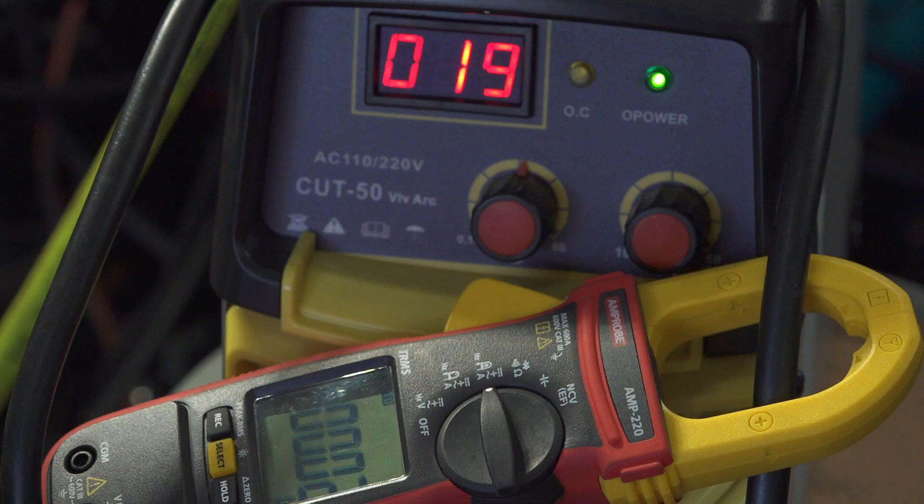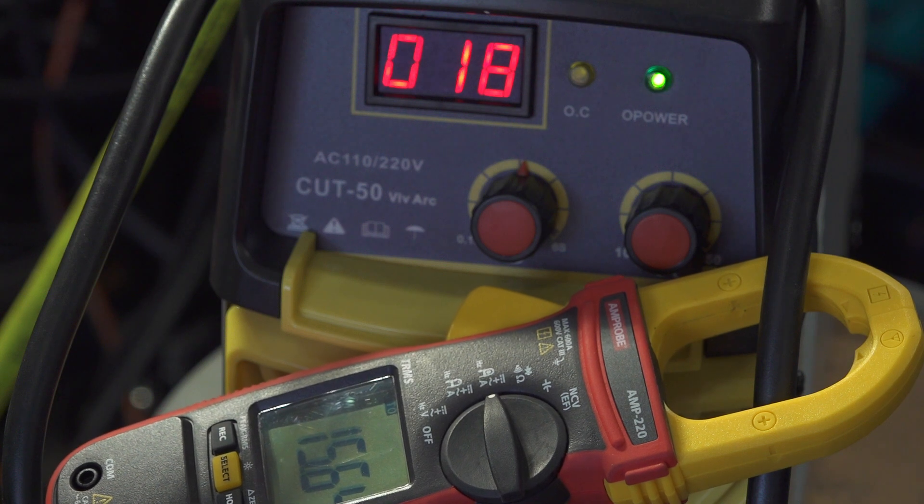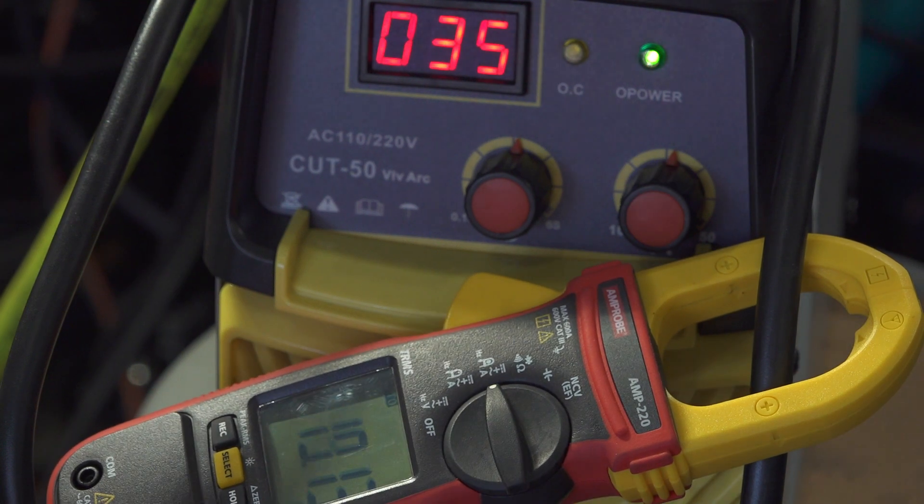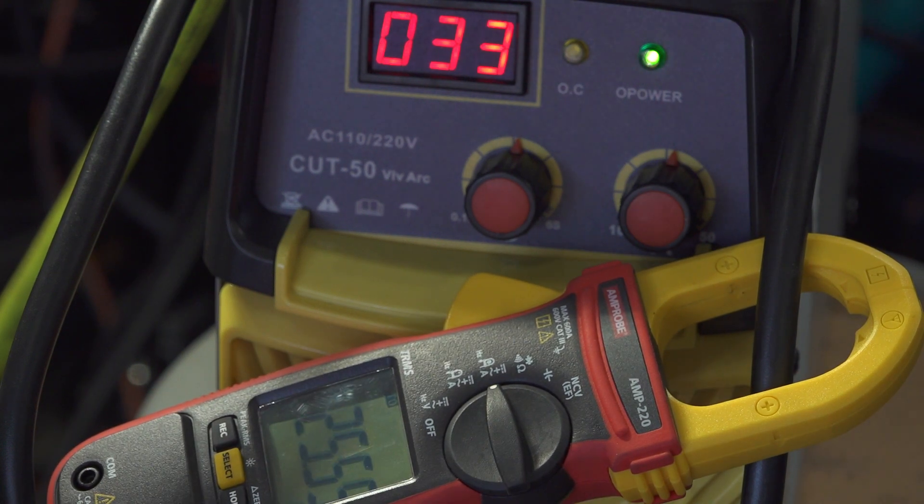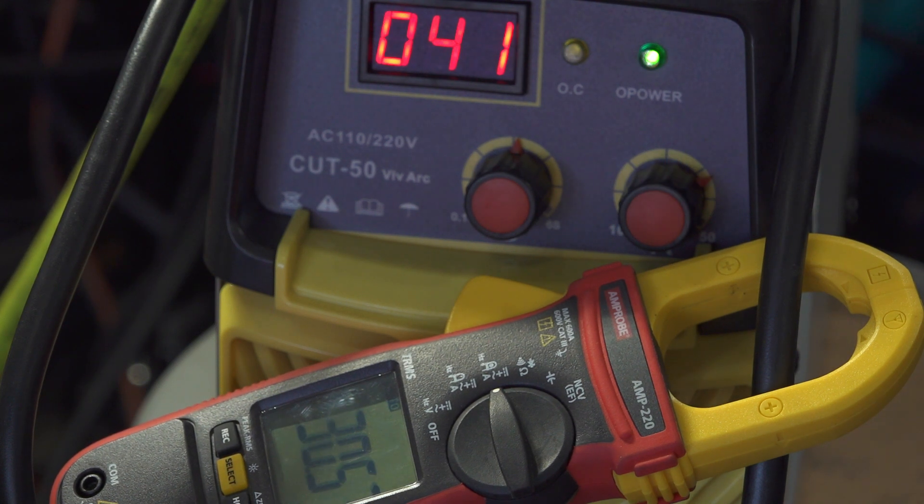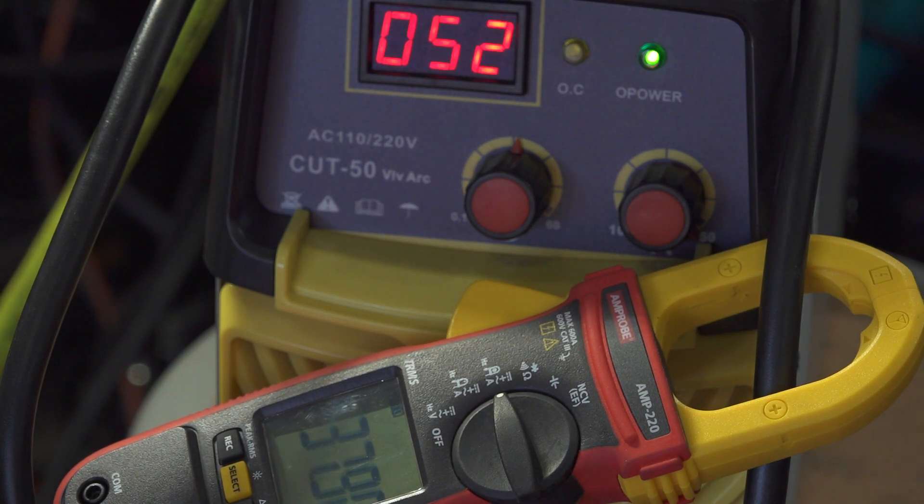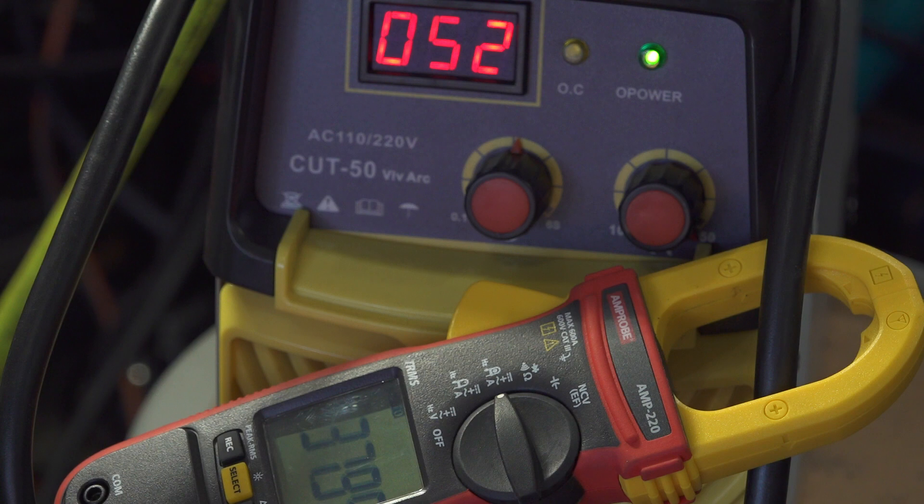I tested the actual amperage output that this Cut50 provides, and I found that the output doesn't match the display and it doesn't have 50 amps of output. I tested at several different settings, and while the display adjustment range goes from 19 to 52, the actual output goes from about 15 to 38 amps.